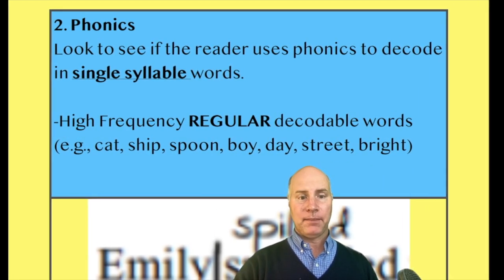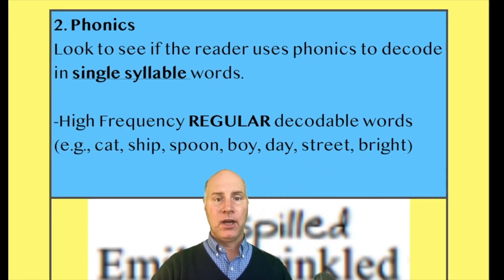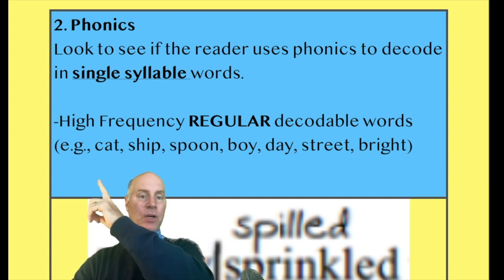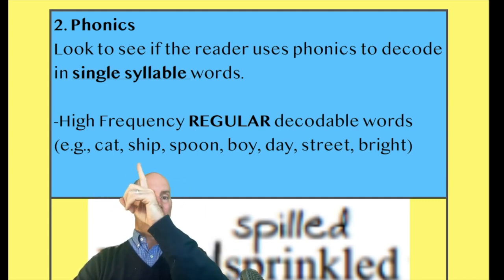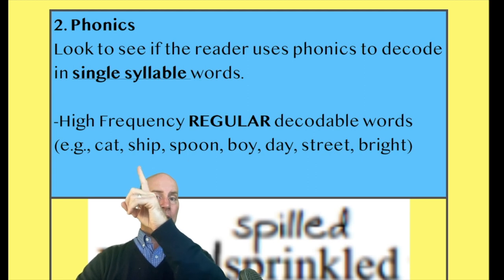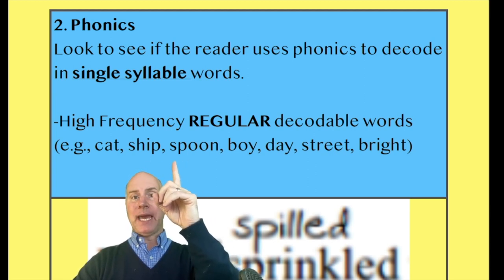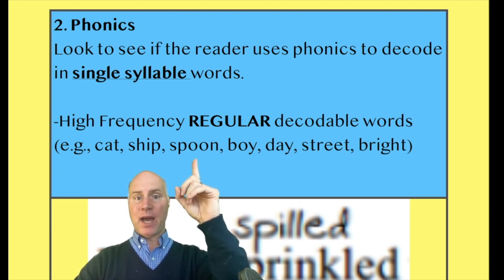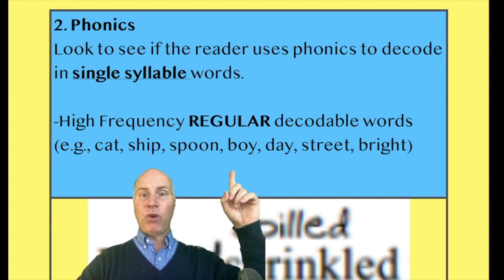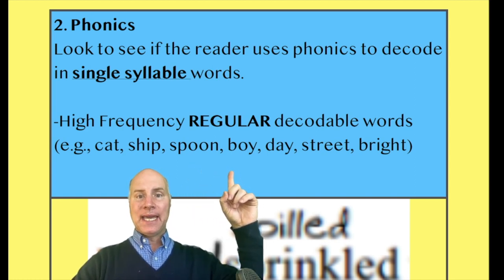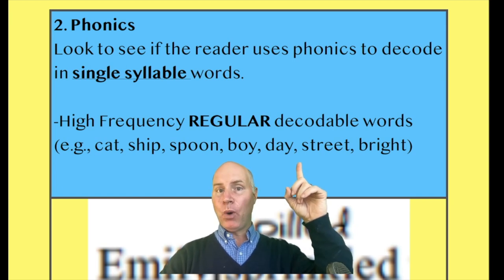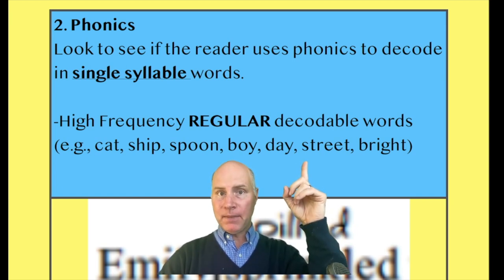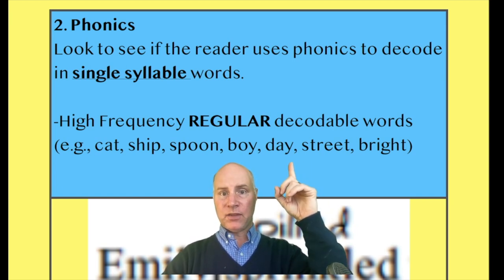We have a CVC word right there — CVC. We have a consonant diagraph there. We have a blend and a vowel diagraph, the double O in spoon. In boy, we have OI — a diphthong. In day, we have a vowel team: two vowels that make that sound. The first one does the talking, the second one does the walking.